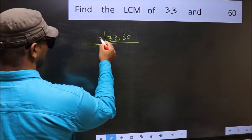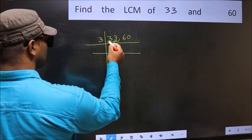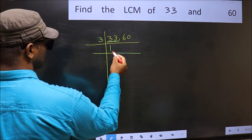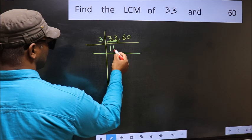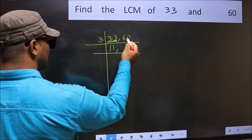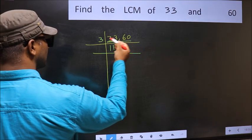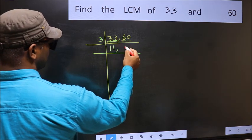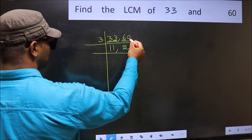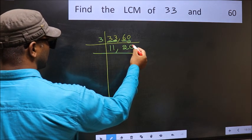So take 3. First number, 33: when do we get 33 in the 3 table? 3 times 11. The other number, 60, is divisible by 3. 3 times 20. Write this down.